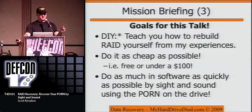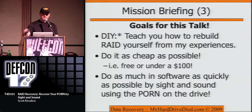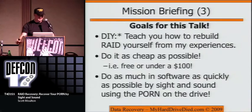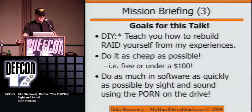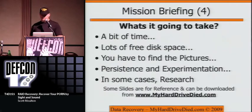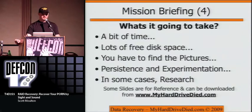This is kind of a do-it-yourself talk. In one hour, as much as I can cover — you'll still have to do some of your own research. If you can figure out things about the RAID array itself, the order of the disks, great. If not, we're going to guess, and I'm going to show you how I guess. After you've seen about 3,000 of these, it becomes like Matrix stuff — you start to see it. We're going to do it as cheap as possible. It's going to take time and disk space. You've got to be persistent and experiment. Research helps. Slides are on myharddrivedied.com.